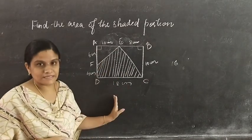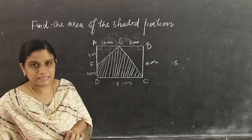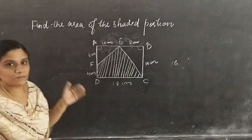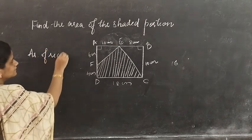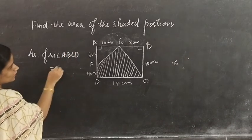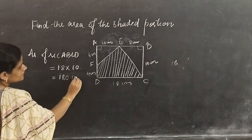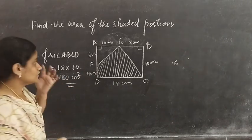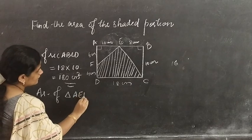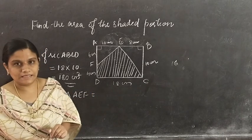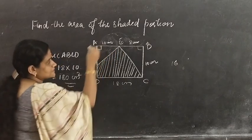From the area of the rectangle, we have to subtract the area of these two right angle triangles. First, area of rectangle ABCD equals L into B, that is 18 into 10, which is 180 cm square. Now for area of triangle AEF: this is a right angle triangle where AE will be the height and AF will be the base.